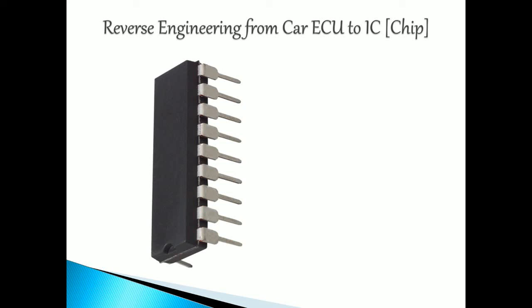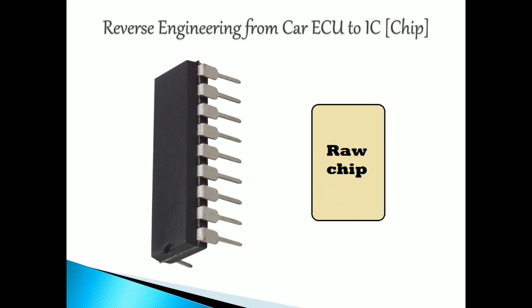This chip has been programmed to control or perform some process. For now, just assume this is the chip we are going to work on. Consider this a raw chip — I have given the chip as a diagrammatic representation.